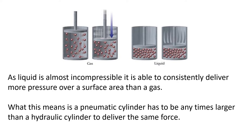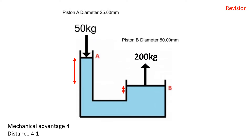This is the classic hydraulic jack diagram. We can see that by exerting a force of 50 kilos on the smaller piston, we're able to lift 200 kilos with the larger piston. That gives us a mechanical advantage of four. And again, there's no free lunch in physics — that mechanical advantage came at a cost of distance. We're able to lift four times the weight, but we only moved a quarter of the distance.